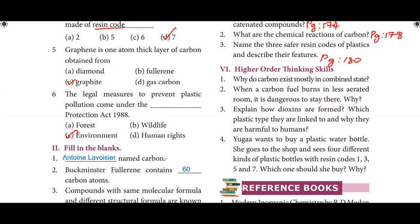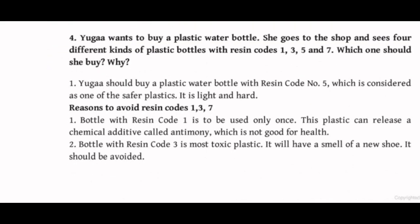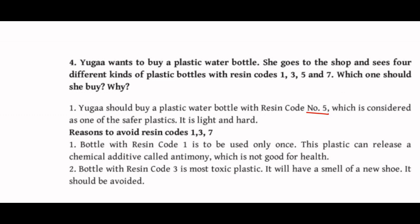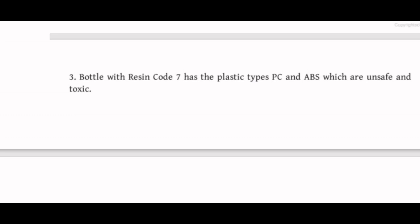Third question: Yuga wants to buy a plastic water bottle. She goes to the shop and sees 4 different kinds of plastic bottles with resin codes 1, 3, 5, and 7. Which one should she buy and why? She should buy the bottle with resin code 5, which is considered one of the safer plastics — it is light and hard. Resin code 1 should be used only once and can release an additive called antimony. Resin code 3 is the most toxic plastic and will have a smell like a new shoe. Resin code 7 contains PC and ABS plastics which are unsafe and toxic.